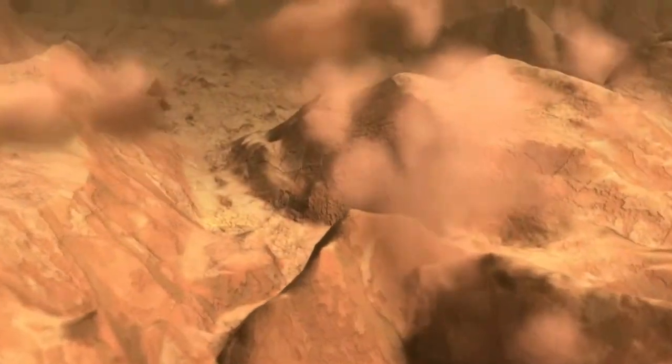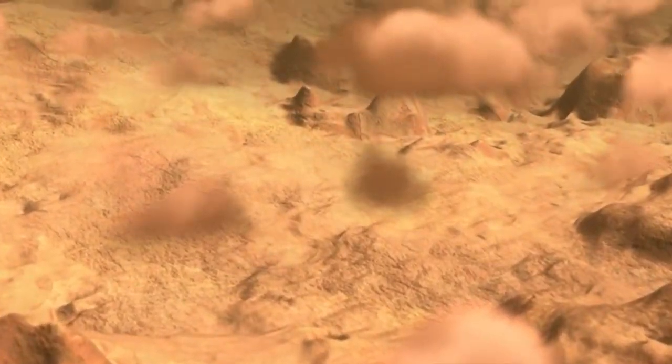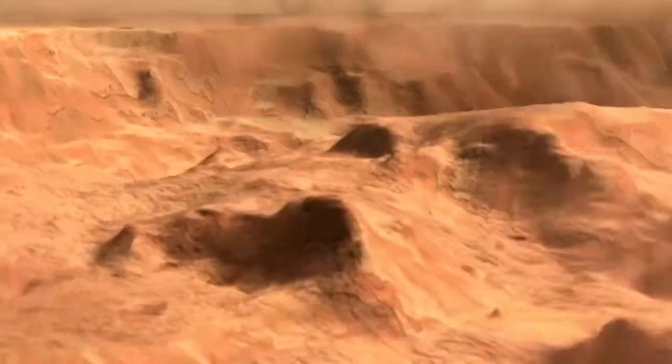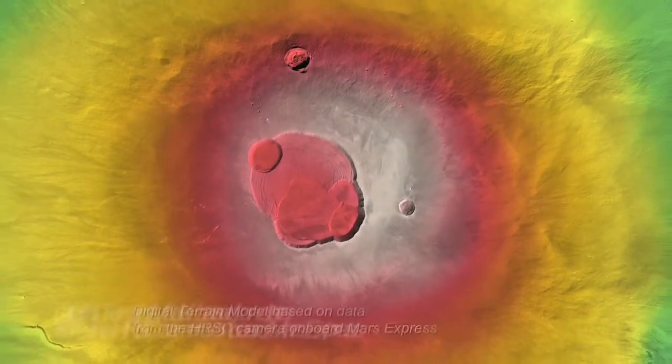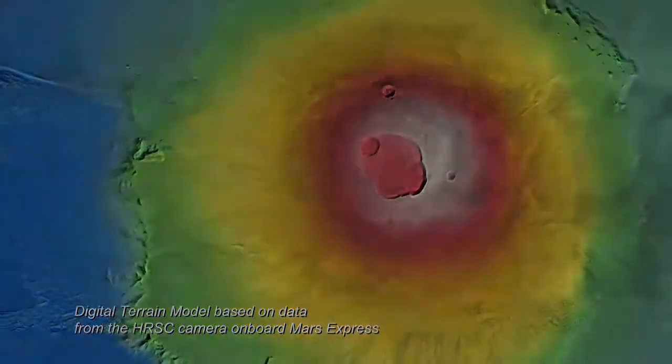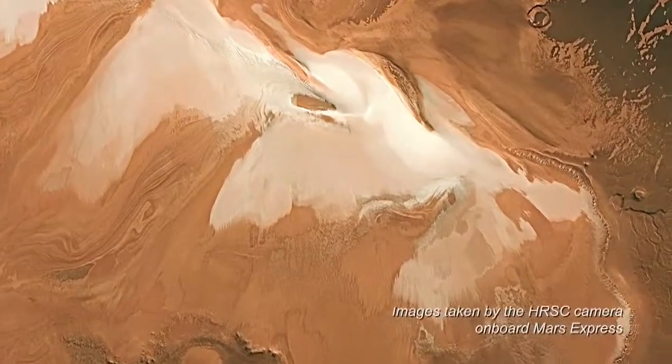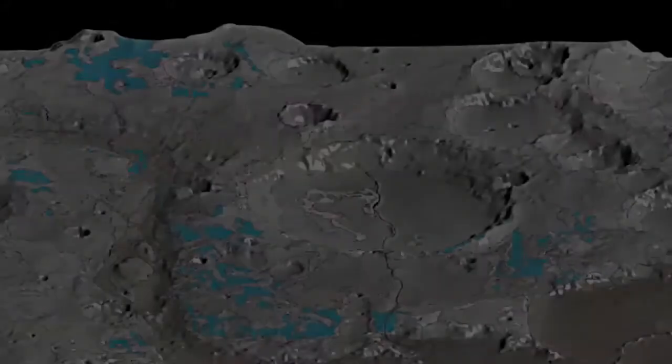In 2004, Mars Express made a surprising detection of methane in the Martian atmosphere. This observation was later confirmed by ground-based telescopes. Further observations from Earth detected plumes of highly concentrated methane. In the atmosphere around Mars, methane is thought to be able to survive for just a few hundred years. The fact that we observe it now means that it must have been produced recently. The source of the methane is unclear. Could it have been produced by recent life or volcanic activity? Or was it produced a long time in the past, trapped in the ice and then released as the ice melts with the changing seasons?